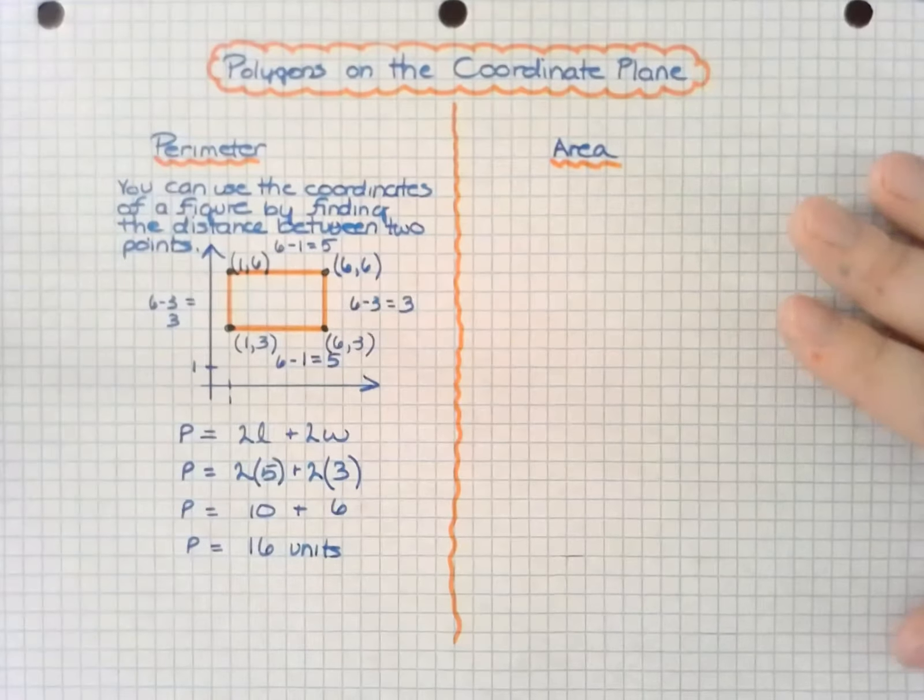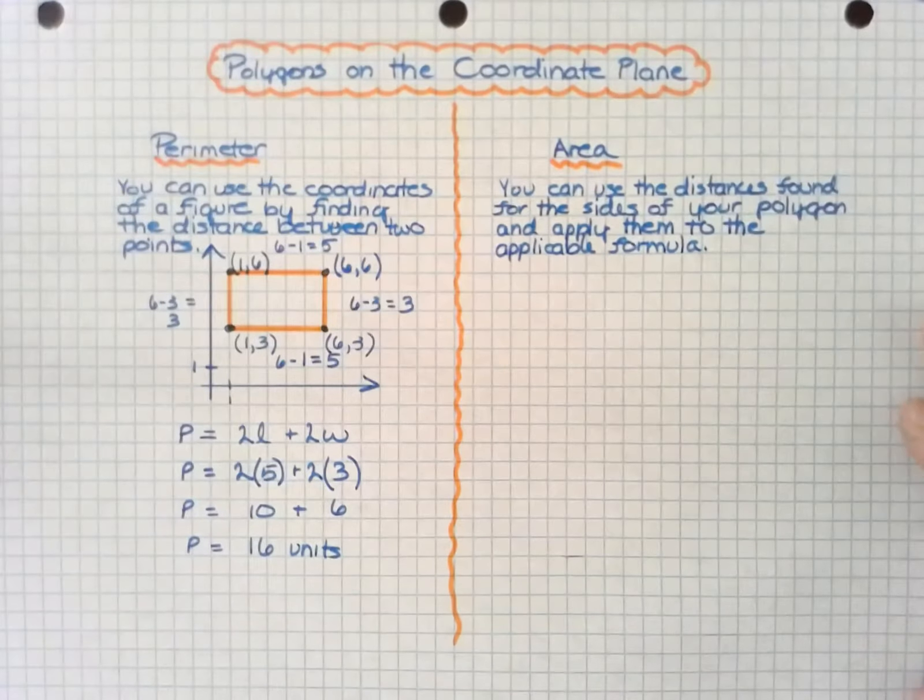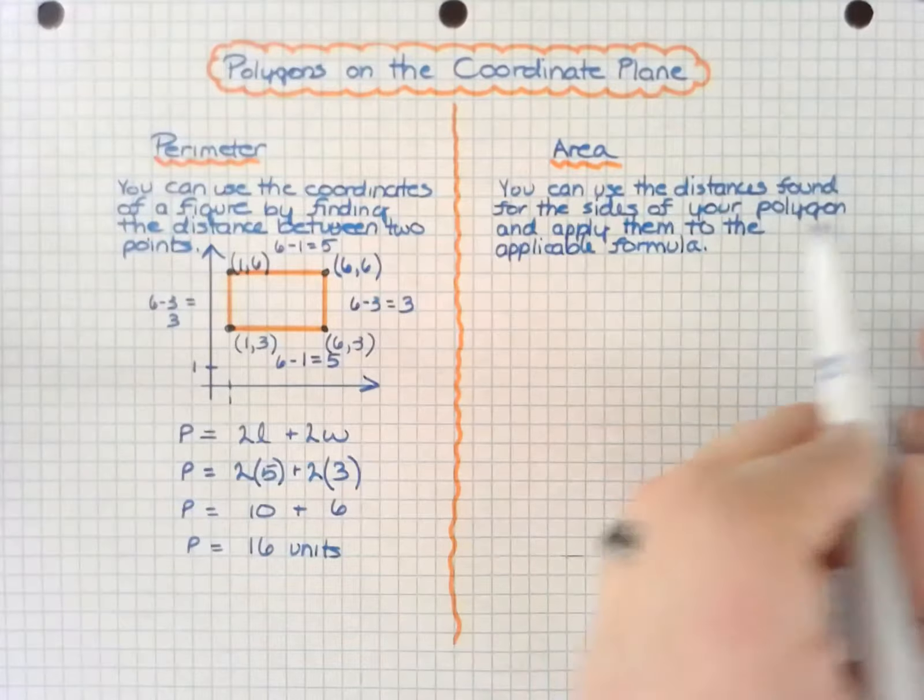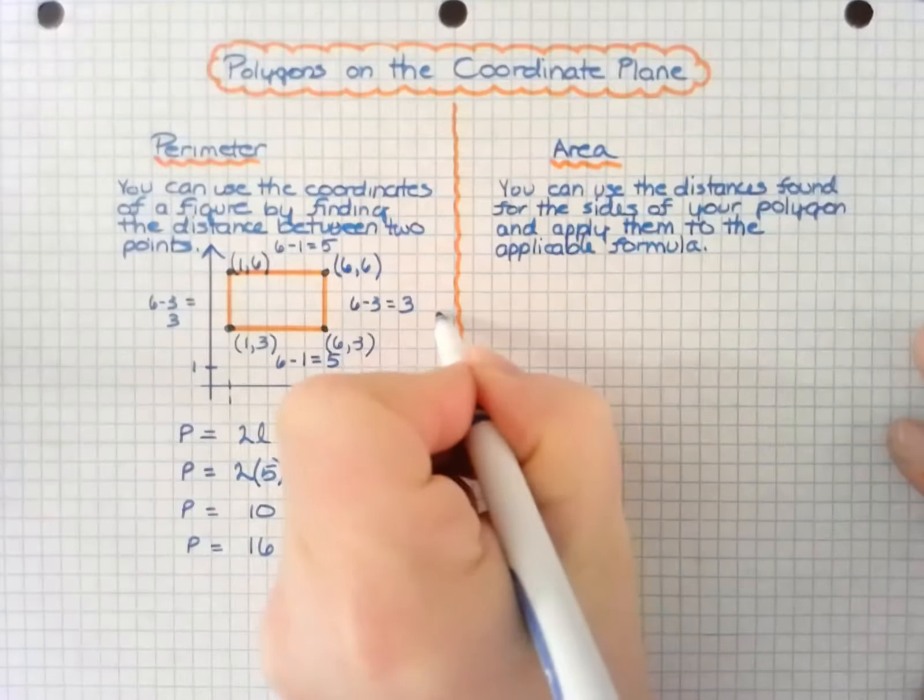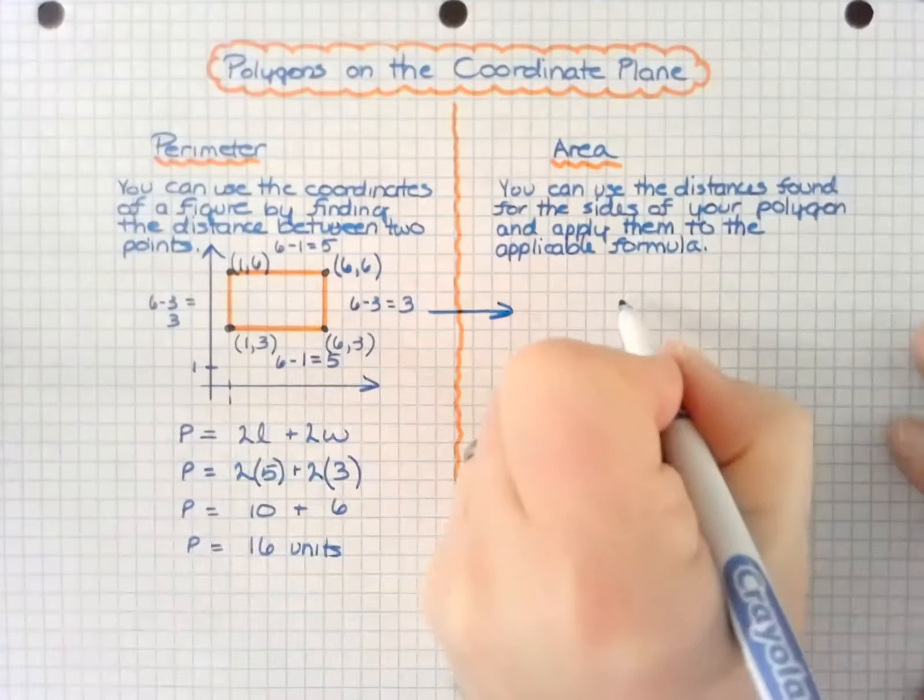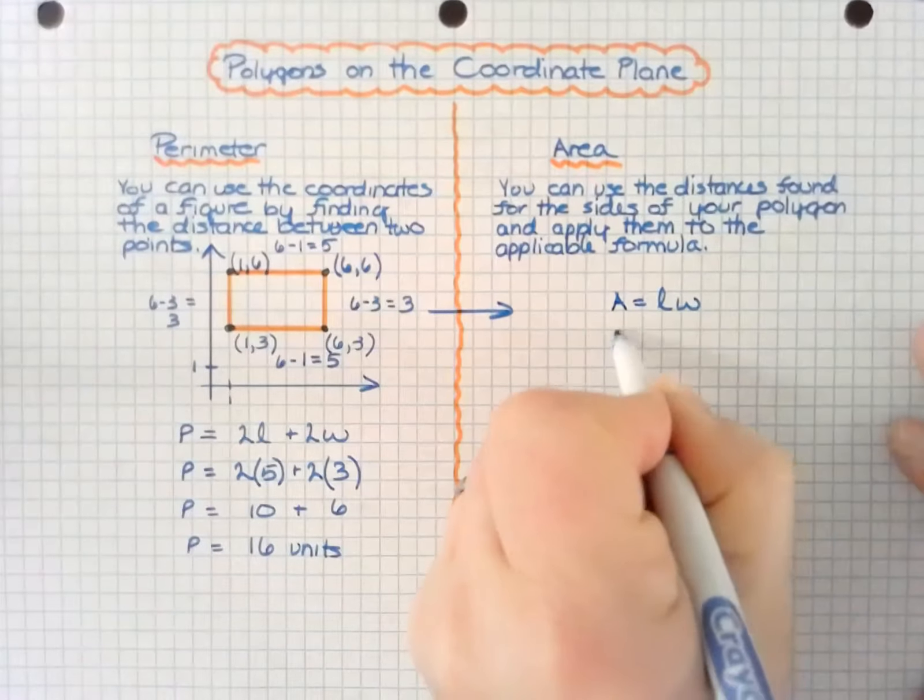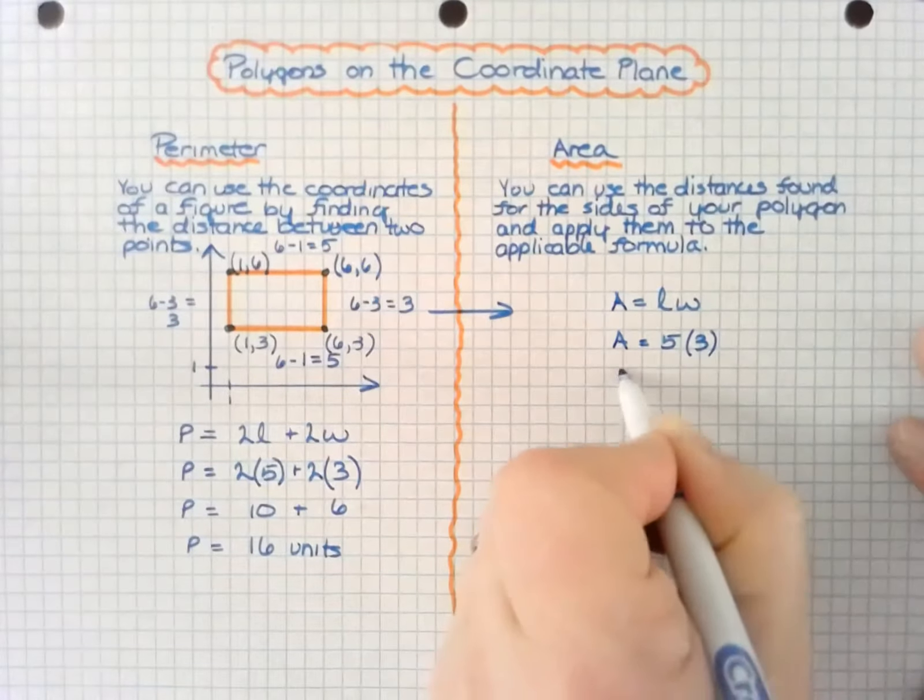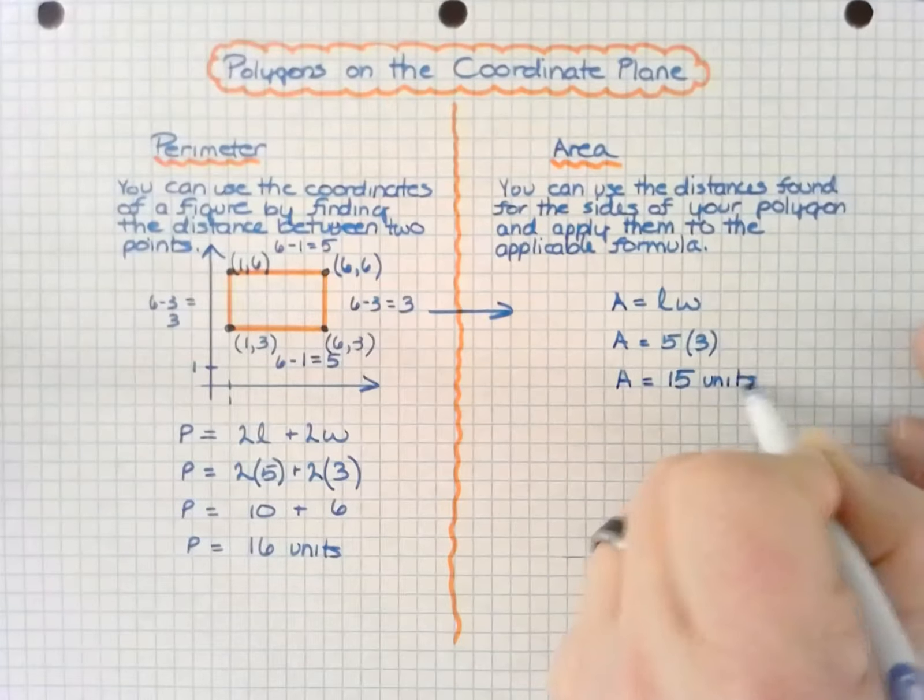For area, you can find the area using those distances on each side of your polygon. You can use the distances found for the sides of your polygon and apply them to the applicable formula. So in this case, this rectangle is area equals length times width. And now that I've found the length, which is 5, and I know the width of 3, I can determine the area, which is 15 units squared.